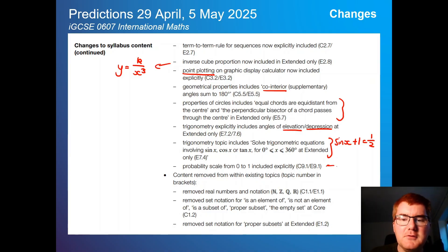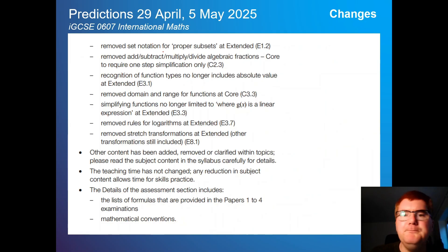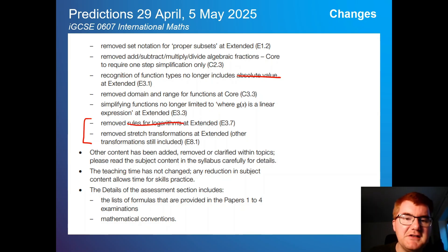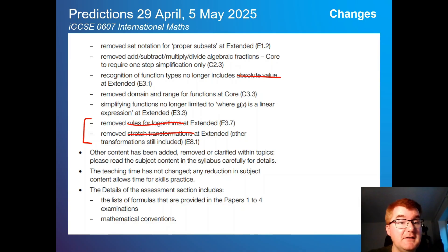The probability scale is included but isn't that critical. Some content has been removed from sets and subsets. Algebraic fractions are now core only. No absolute value — we've already covered that. Most importantly, there are no rules for logarithms — that is gone, bringing it in sync with 0580. And no stretches — both logarithm rules and stretches have completely disappeared from the course.